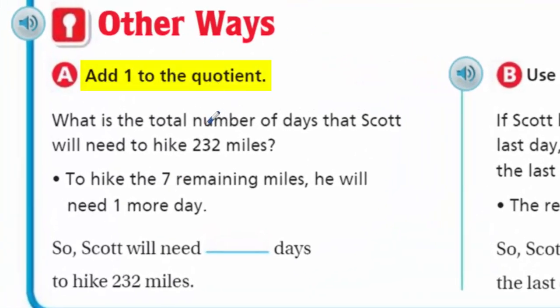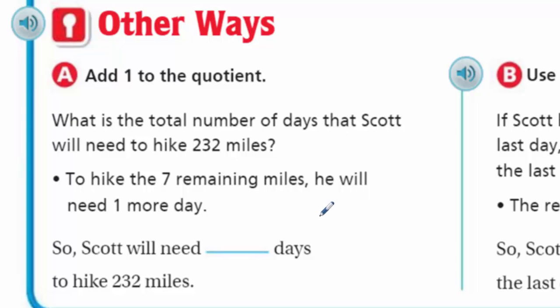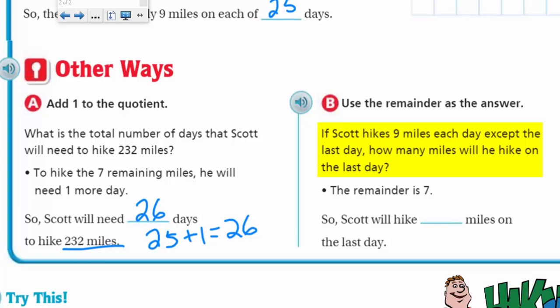Other ways — add one to the quotient. What is the total number of days that Scott will need to hike 232 miles? To hike the seven remaining miles, he will need one more day. So Scott will need 26 days to hike the full 232 miles. The 25 was the quotient; we add one more if he's going to hike all of it, which gives 26. Now, use the remainder as the answer: if Scott hikes 9 miles each day except the last day, how many miles will he hike on the last day? That's the remainder — 7. So Scott will hike 7 miles on the last day.